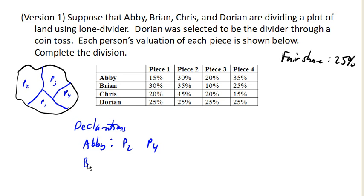Brian values piece one, piece two, and piece four as fair shares. Chris values piece two as a fair share and none of the others. And of course, Dorian values all of them as a fair share because that's the way it works. He's supposed to value all of them as a fair share if he divided fairly.